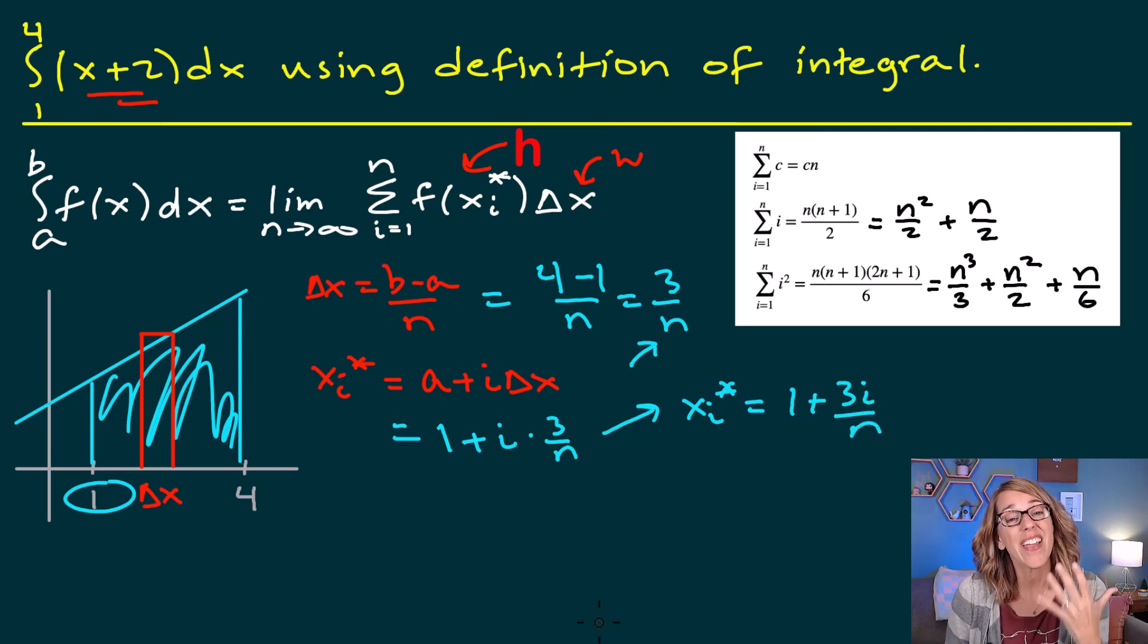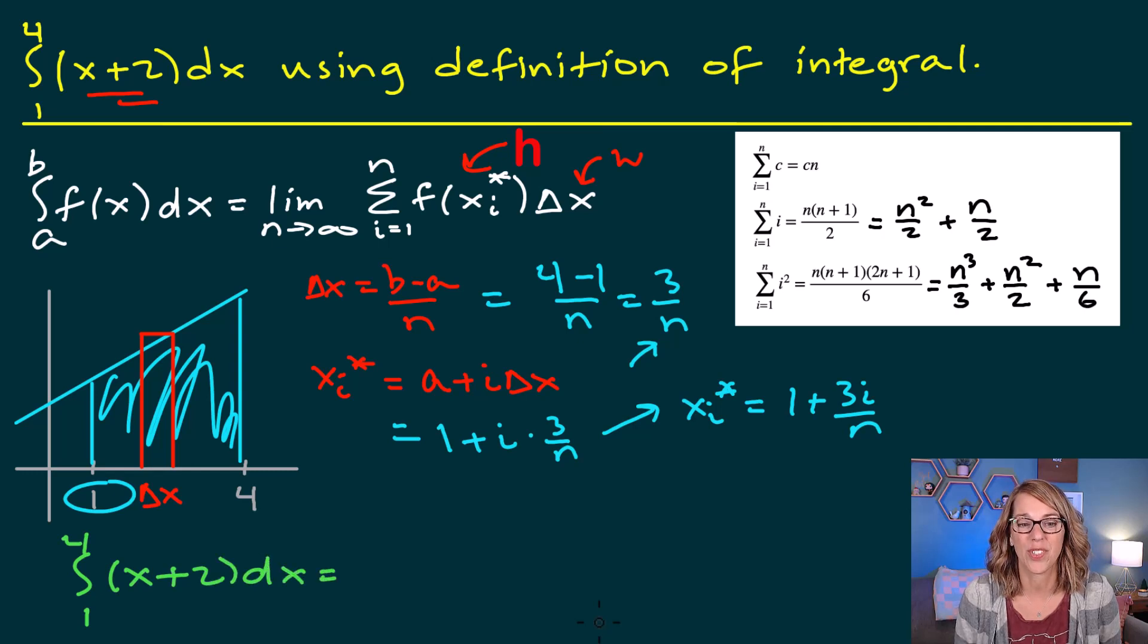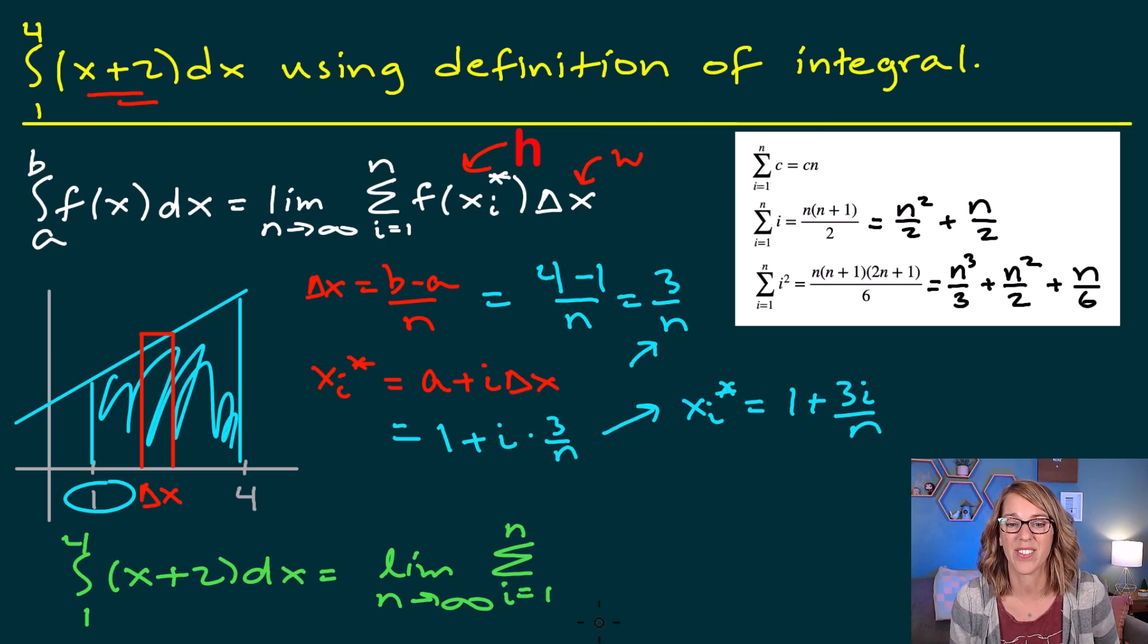We now have everything that we need to evaluate this integral using the definition. So our integral from 1 to 4 of x plus 2 dx is equal to, we're going to use infinitely many rectangles, but we're not going to worry about that until the very last step. So n goes to infinity. And then we've got my summation. So i goes from 1 to n. These are each of my rectangles.